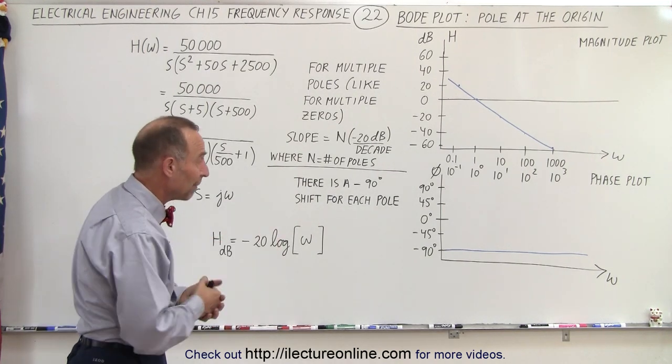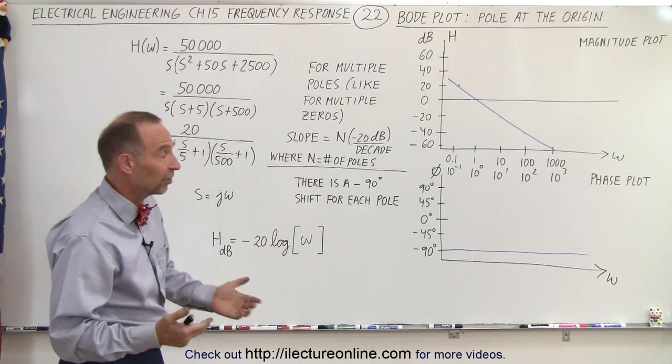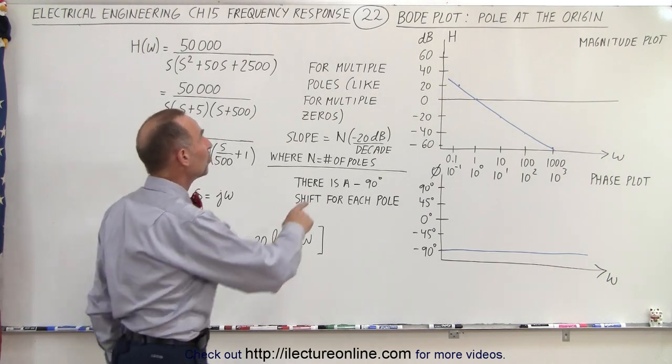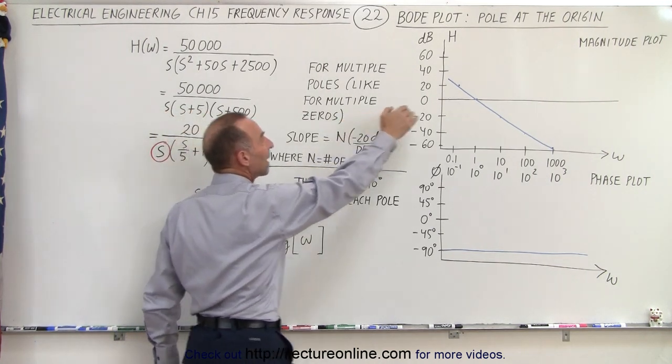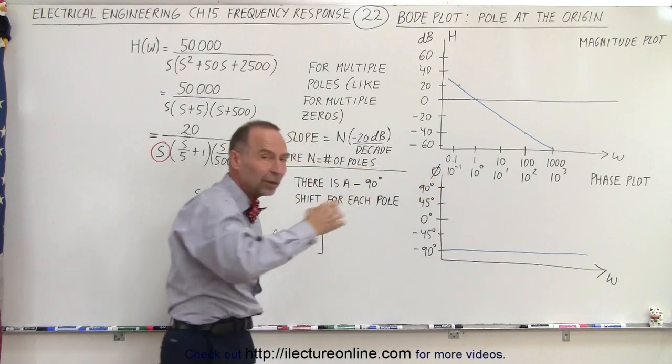If there's two poles, it would be minus 90 degrees times 2, or minus 180 degrees. Also notice that the slope is only minus 20 dB for a single pole.